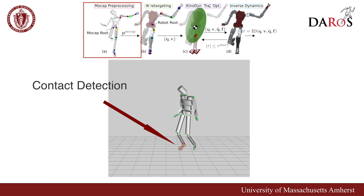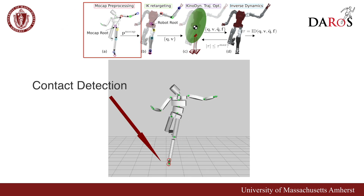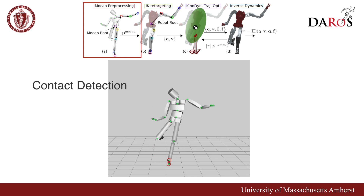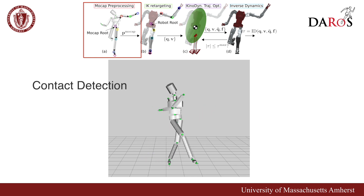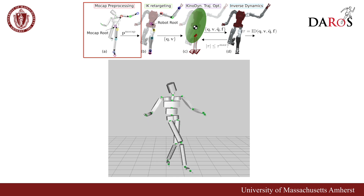First, we pre-process motion capture data from human soccer kicks. Next, we align this data with the robot's morphology, establish a ground-foot contact schedule, and identify crucial timing parameters, such as the beginning of the swing phase and ball impact time.